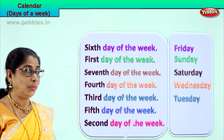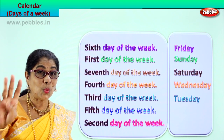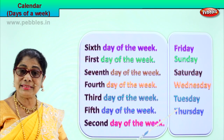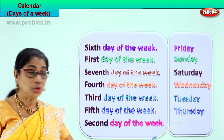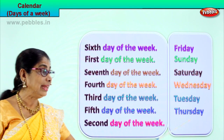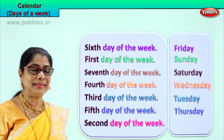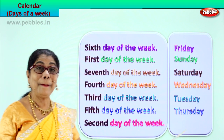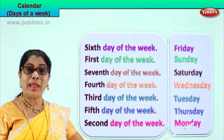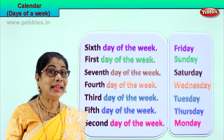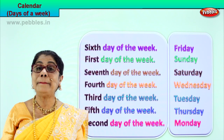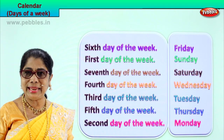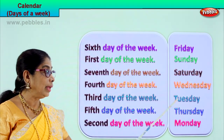Which is the fifth day of the week? Sunday, Monday, Tuesday, Wednesday, Thursday — the fifth day of the week is Thursday. Spell Thursday, begin with the capital letter: T-H-U-R-S-D-A-Y. And the second day of the week: Sunday, Monday — the second day of the week is Monday. Spell Monday: M-O-N-D-A-Y. Always begin the days of the week with a capital letter, because it's the name of the day of the week.